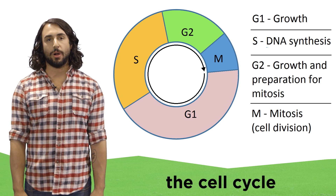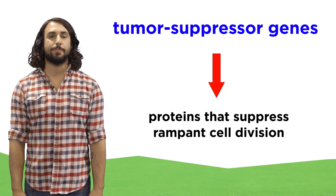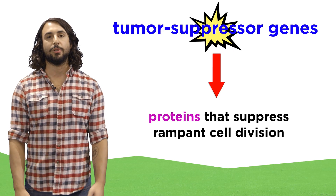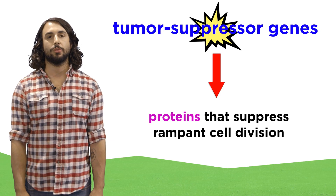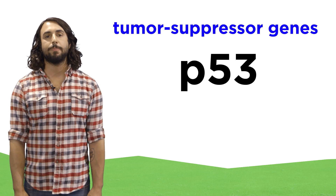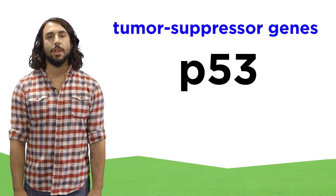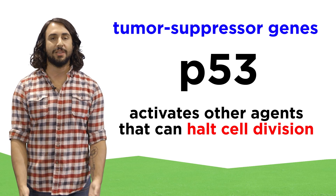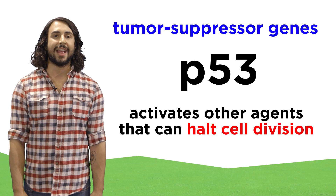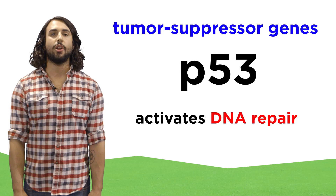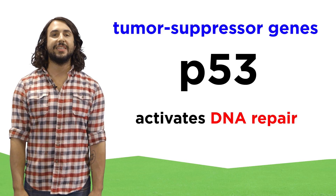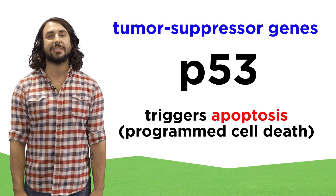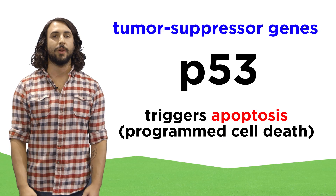Nature has evolved tumor suppressor genes, which code for proteins that suppress uncontrolled cell growth. If there is a mutation in one of these genes that renders the resulting protein incapable of its function, an important mechanism for suppressing tumor growth can be lost. Almost certainly the most important tumor suppressor gene is called p53. The protein this gene codes for is able to activate several other genes whose proteins are responsible for a variety of activities that halt the cell cycle, typically by binding to certain enzymes and disrupting their activity. The p53 protein can also turn on genes involved in DNA repair, and if the DNA is damaged beyond repair, p53 can even activate suicide genes that bring about apoptosis — programmed cell death — ensuring that the faulty cell does not proliferate and become a tumor.